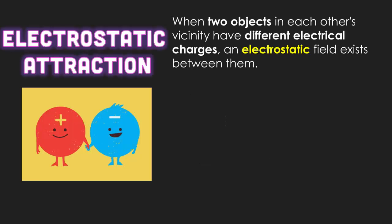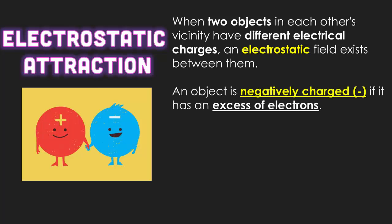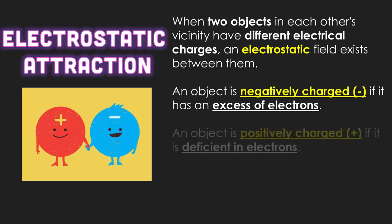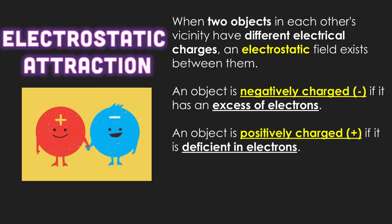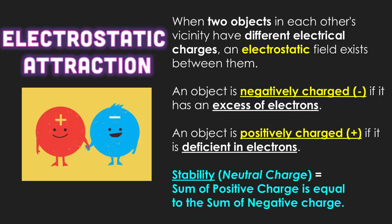We've talked about electrostatic attraction before — it's in video lesson 1. If you have a negative charge to your electrostatic field, that means you have more electrons than normal. If you have a positive charge, you have less electrons than normal. Stability means a neutral charge, so when two atoms are bound together in their ion forms, they should be stable. That means the sum of the positive charges equals the sum of the negative charges. We're now going to use these characters to represent the different charges and types of bonds.